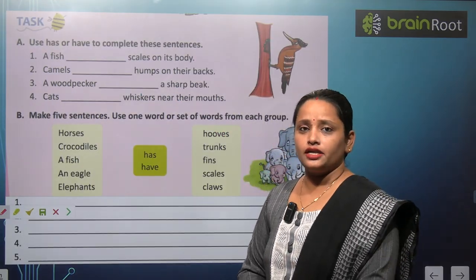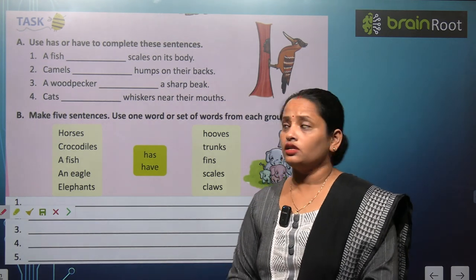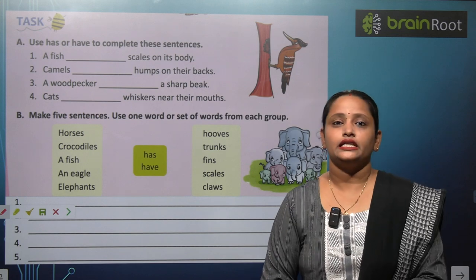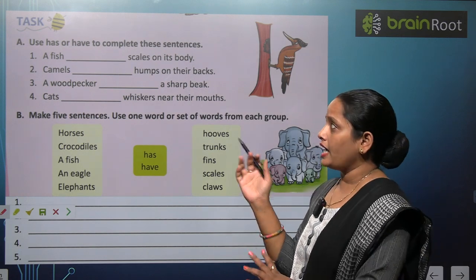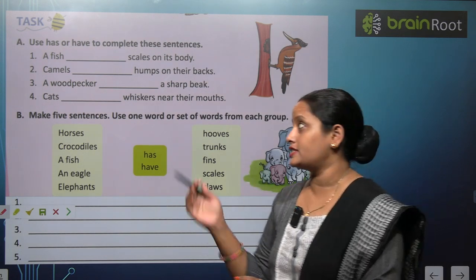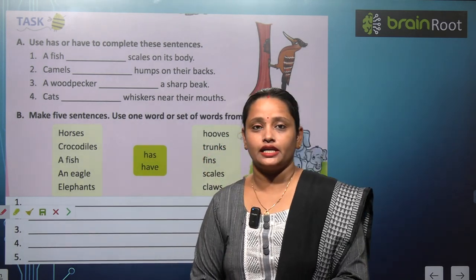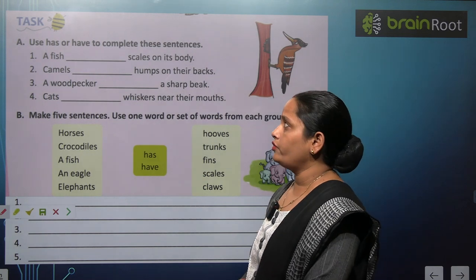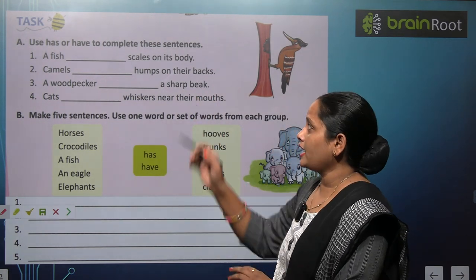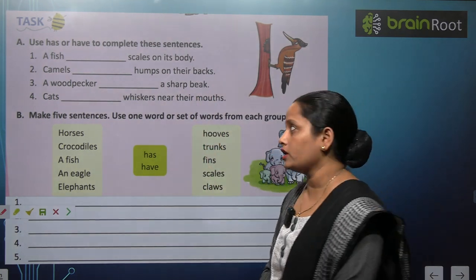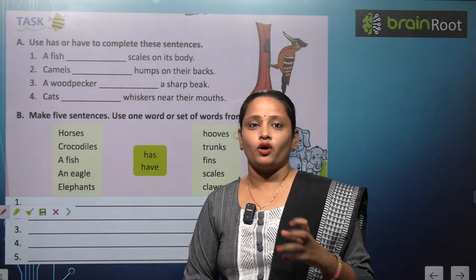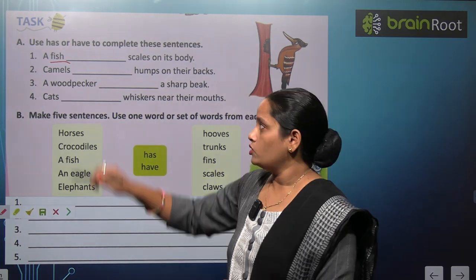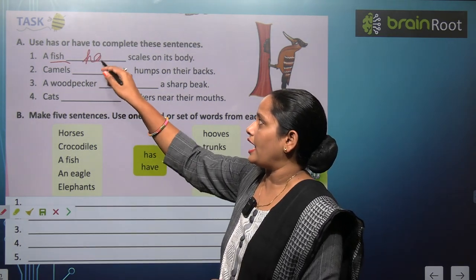Now children, let's do this exercise. Use has or have to complete these sentences. The first one is: A fish dash scales on its body. Fish ki body pe kya hai? Scales. Kitni fish hain yahaan pe? One. So we will write here has.